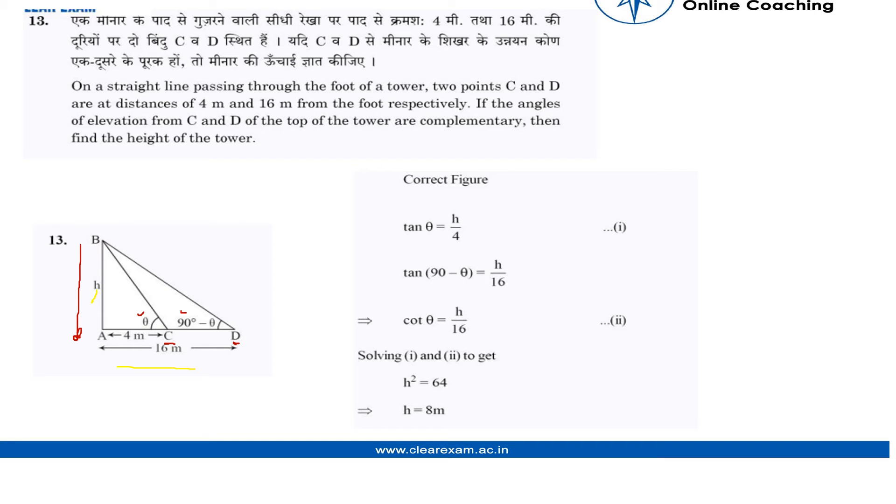And applying tan 90 minus theta would give us h by 16. We also know by the property that tan 90 minus theta is cot theta.